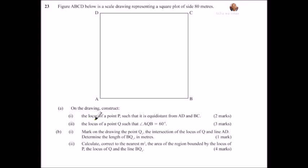So part A, on the drawing construct: roman number 1, the locus of point P such that it is equidistant from AD and BC. Roman number 2, the locus of point Q such that angle AQB is equals to 60. Part B, roman number 1, mark on the drawing the point Q, the intersection of locus Q and line AD. Determine the length of BQ in meters.